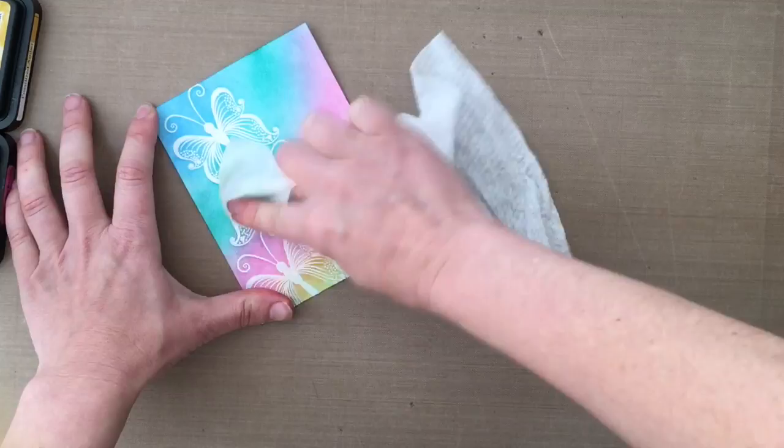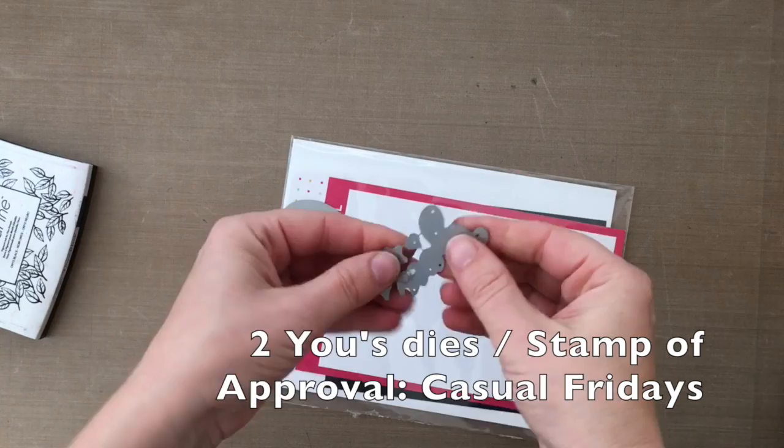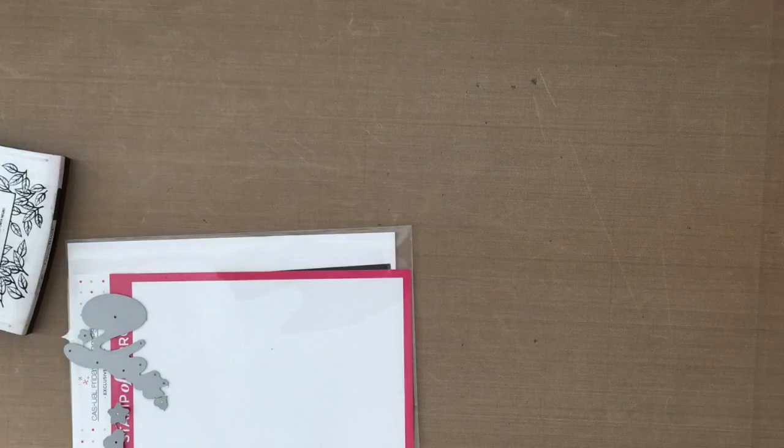I'm taking a wet wipe here and just going over the white embossing of those butterflies to remove any ink that's sitting on the top. I'm going to take these dies called the 2U dies from the Stamp of Approval Collection, made by Casual Fridays. I'm going to run one of those U dies through my die cutting machine.